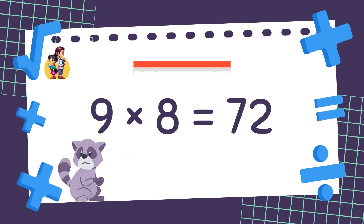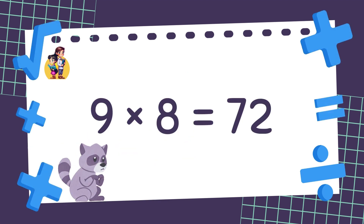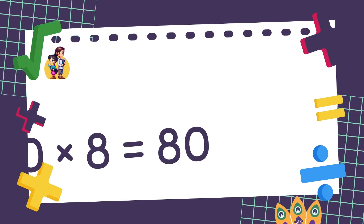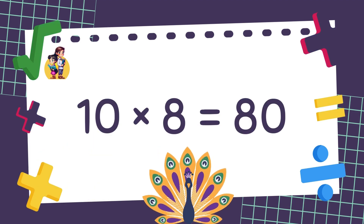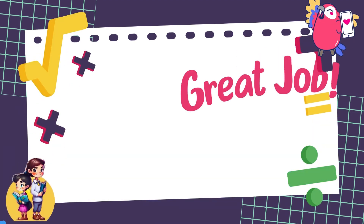9 times 8 is equal to 72. 10 times 8 is equal to 80. Well done!